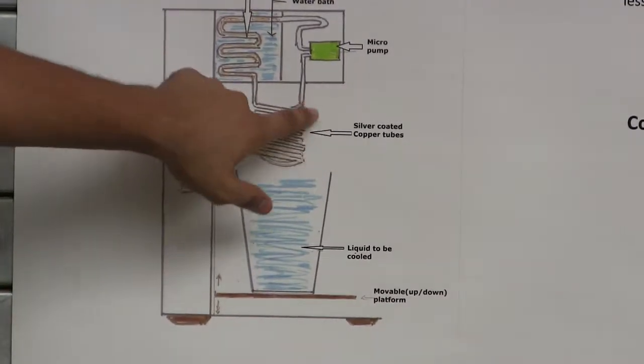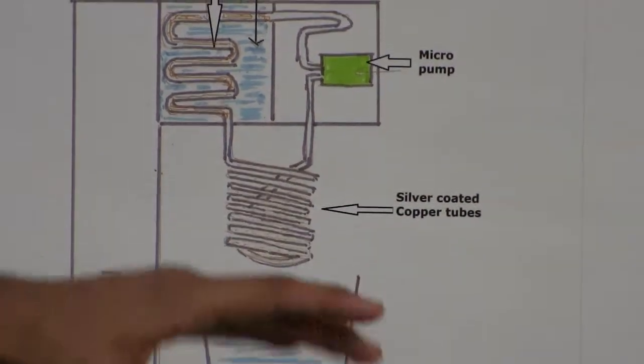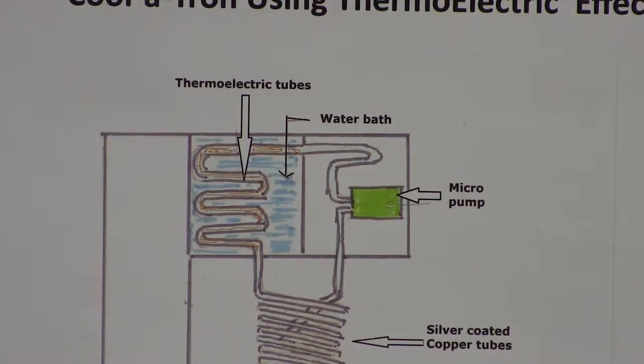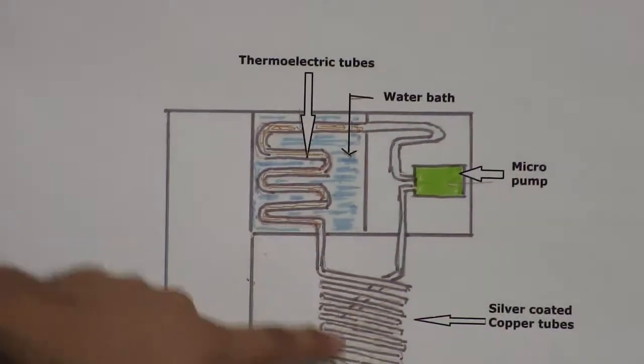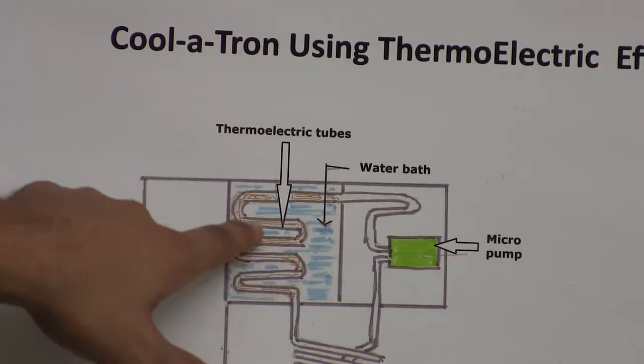What you see here are the coolant tubes. When cooled and immersed in the beverage, they will cool the beverage down. Above this is how the coolant gets cooled. The way the device works is there's a coolant that runs through all these tubes. This coolant is initially cooled by the thermoelectric effect in this region.